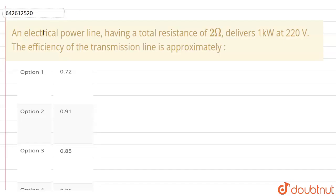In this question, an electrical power line having a total resistance of 2 ohms delivers 1 kilowatt at 220 volts. We have to calculate the efficiency of this transmission line.